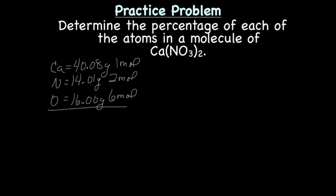Now, we need the molar mass of Ca(NO3)2, and that would be 164.1 grams.